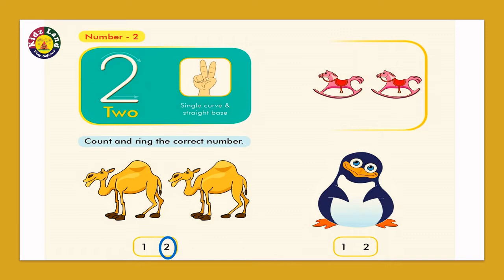And what's the next picture? It is the penguin. And how many penguins are there? It is only one penguin. So what should we circle? We have to ring number 1.